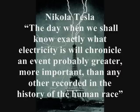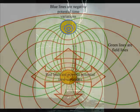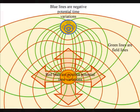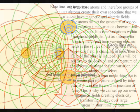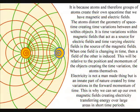In this theory, it is because the atoms can distort the geometry of space and time that we have electromagnetic fields. It is time variations within magnetic fields that act as the source for electric fields, and time-varying electric fields is a source of the magnetic fields.